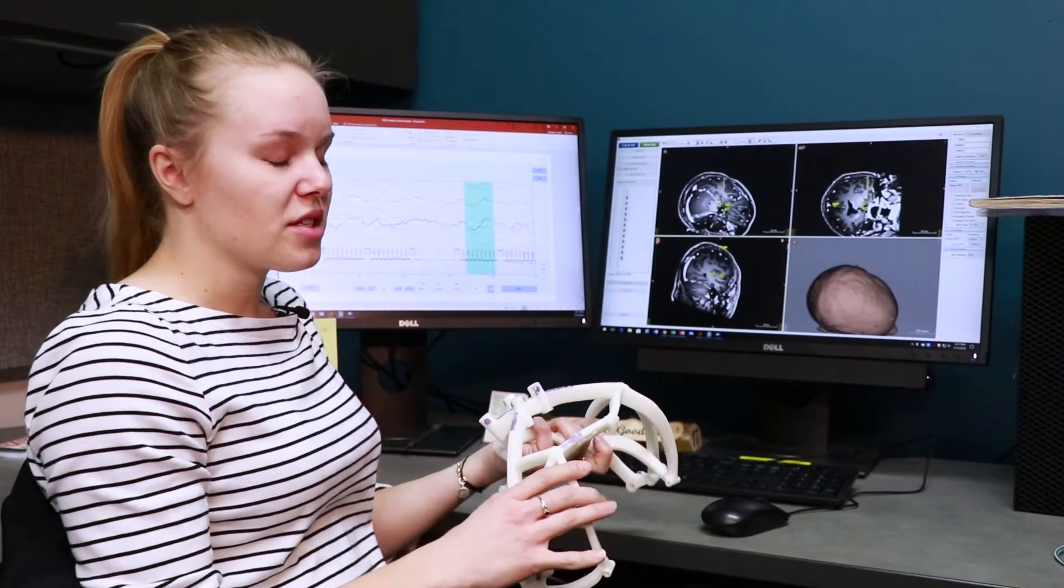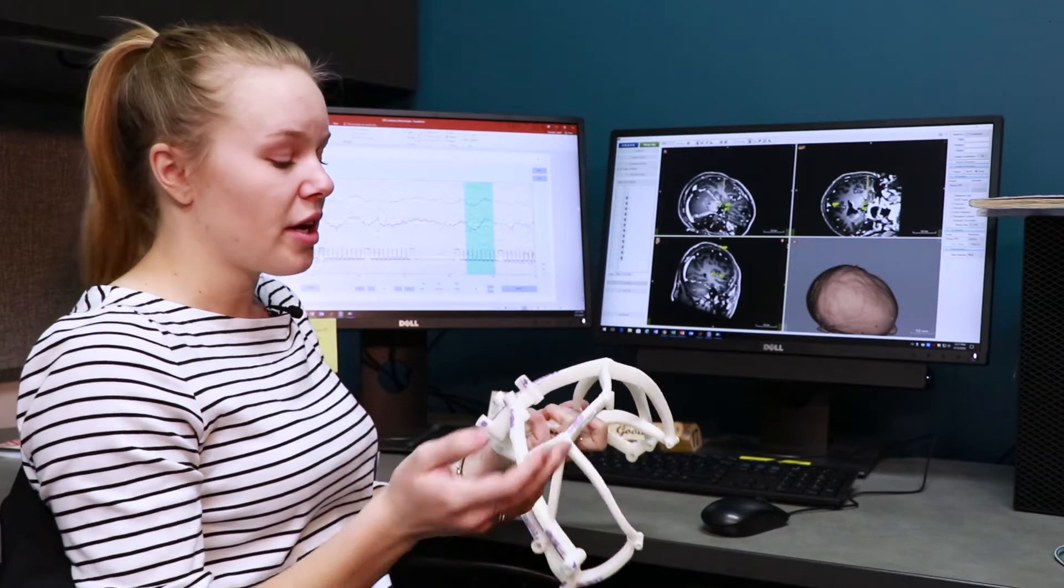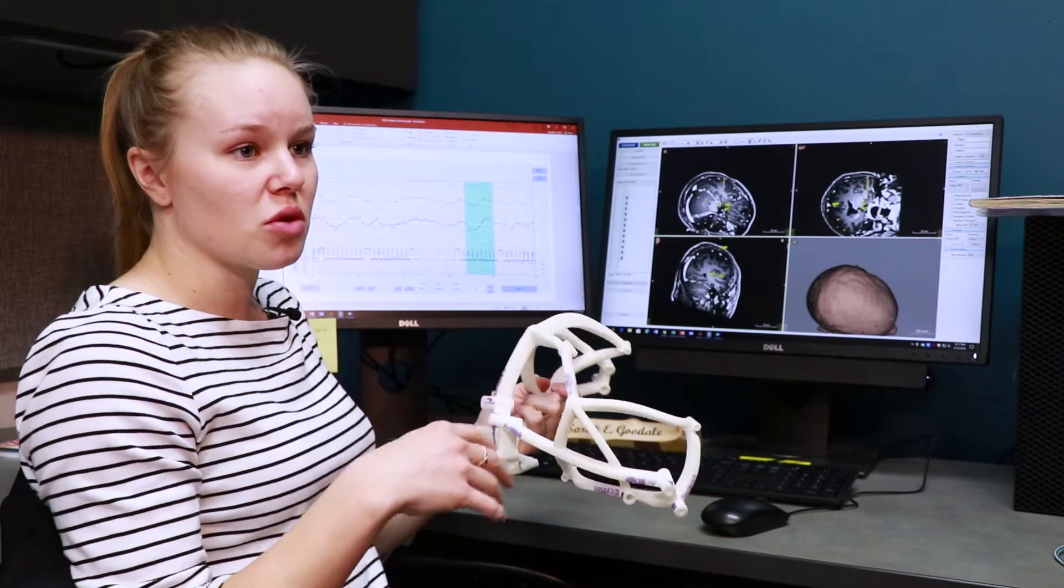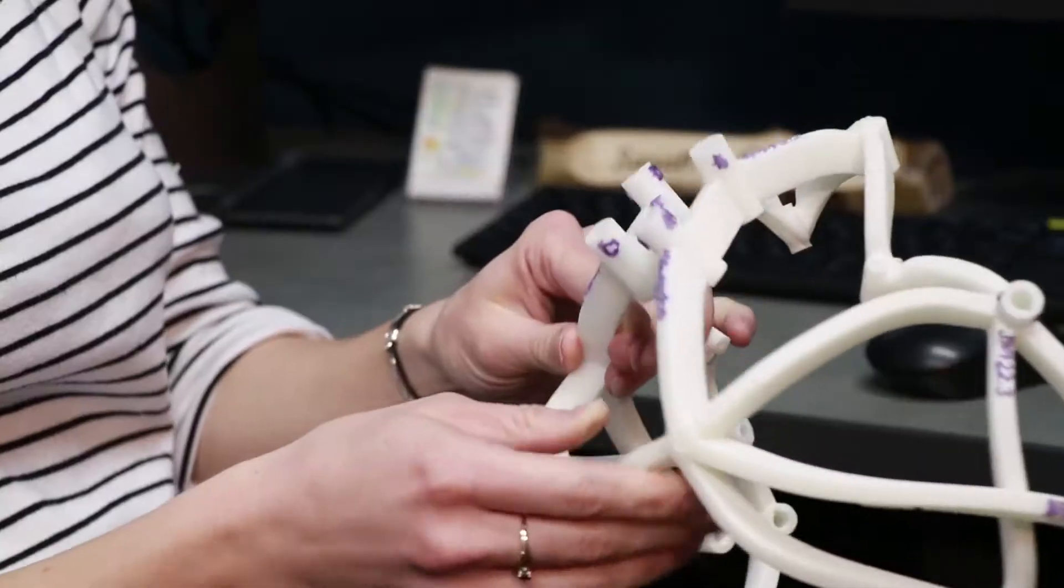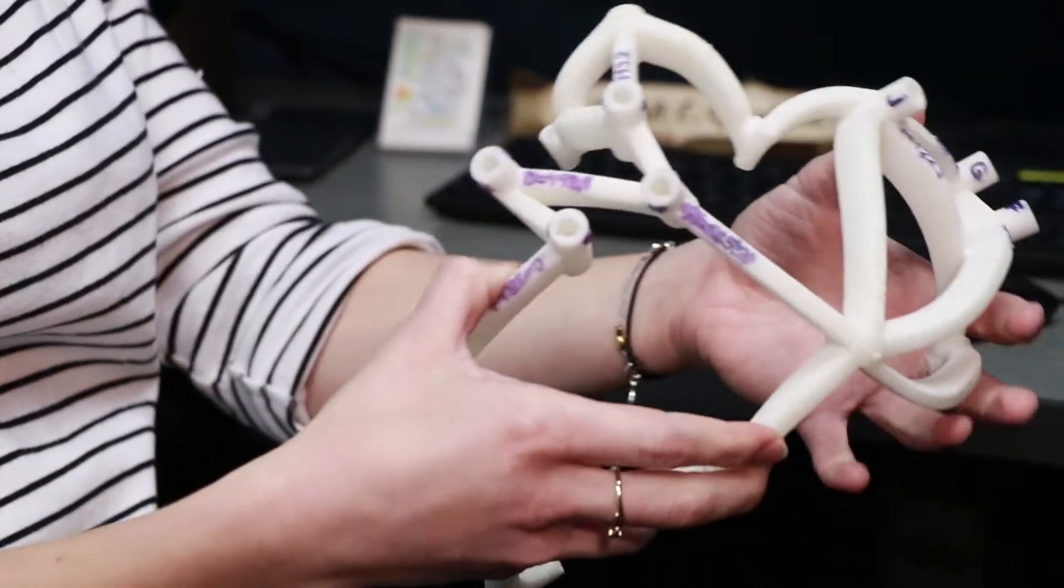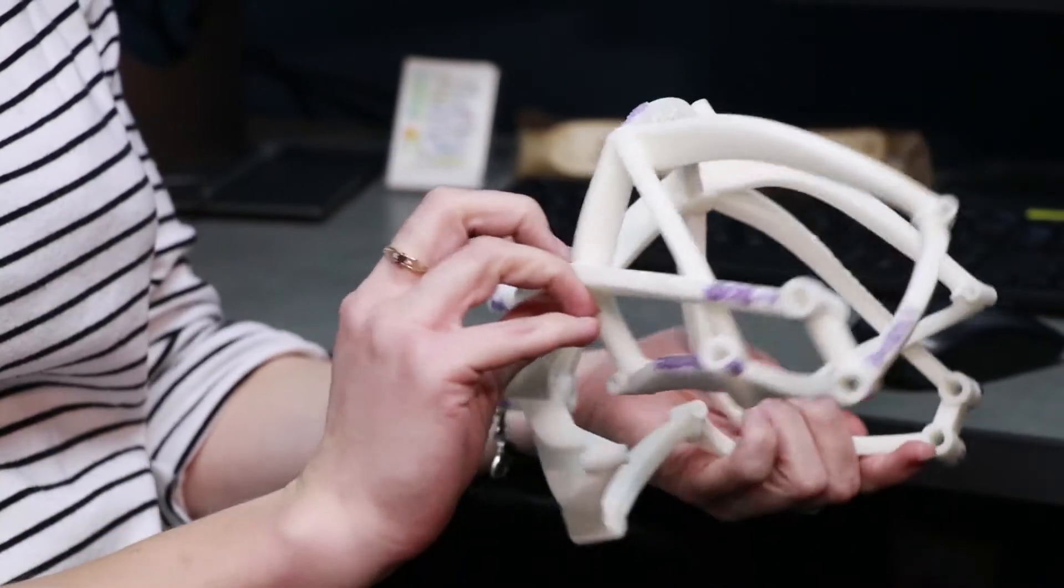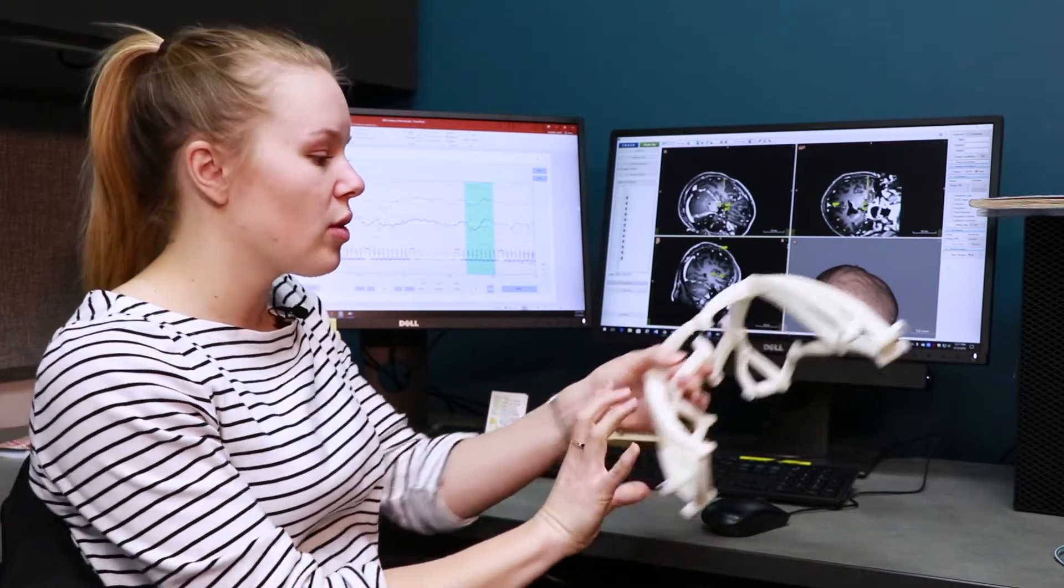One of the projects we have going on is stereo EEG. That's when Dr. Englott will implant electrodes into the brain of epilepsy patients to record the brain activity that's happening. He'll basically create this before the surgery and then put the electrodes through these holes while he's actually performing the surgery, kind of a better way to direct them so they know where they're going.